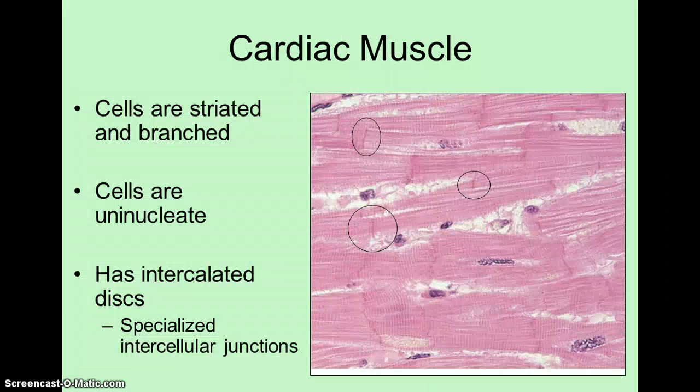Cardiac muscle shares some similarities with skeletal muscle. If you look at our slide of cardiac muscle and run your eyes from left to right, you'll notice that cardiac muscle is also striated — it has that striped or banded appearance. However, cardiac muscle cells are not long and skinny like skeletal muscle cells; they are shorter and they branch, meaning they are typically V-shaped or sometimes Y-shaped. Another big difference is that cardiac muscle cells are not multinucleate — each cell has only a single nucleus. Despite these differences, because of the striations, skeletal muscle and cardiac muscle can appear similar under a microscope.